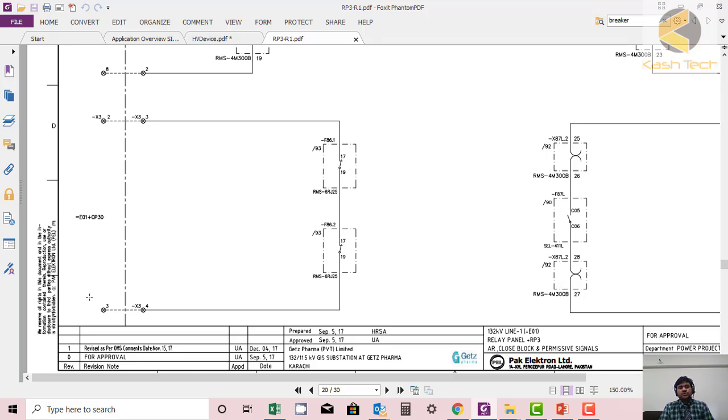Also the indication will be available on the control panel if any of the lockout is operated, so operator can check easily. You should call a protection engineer to come and verify. After verification they can reset the lockout and breaker can be closed. So this is the lockout circuit in our drawing. Thank you.